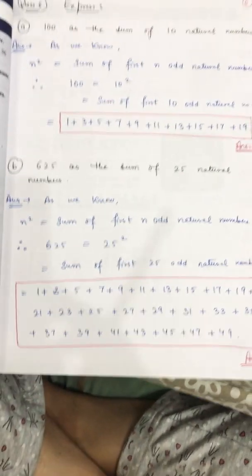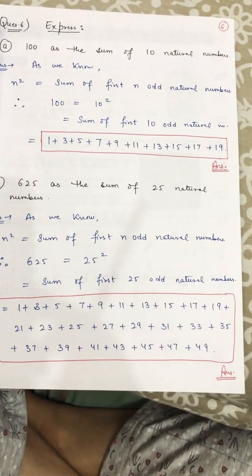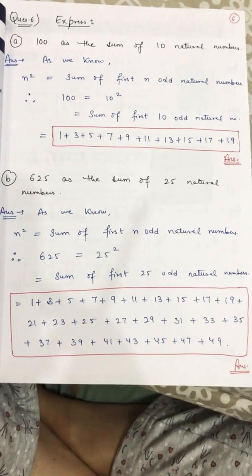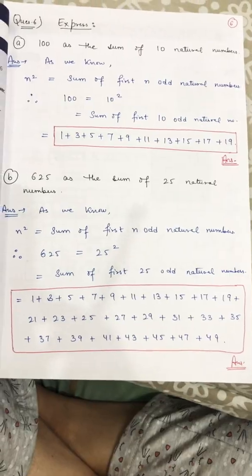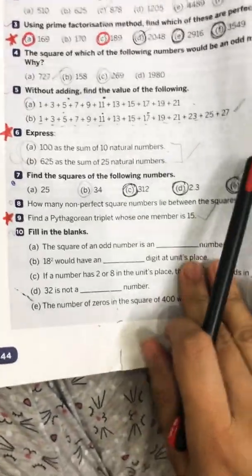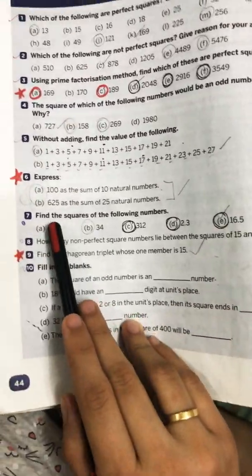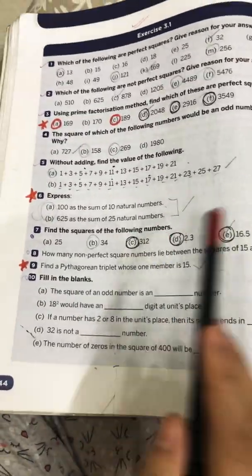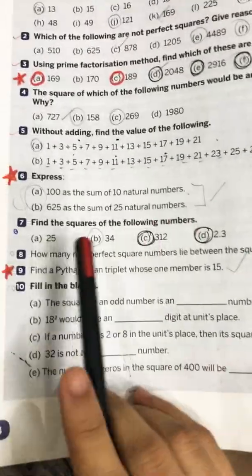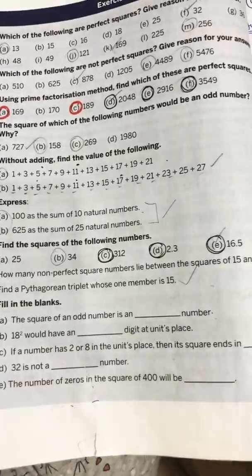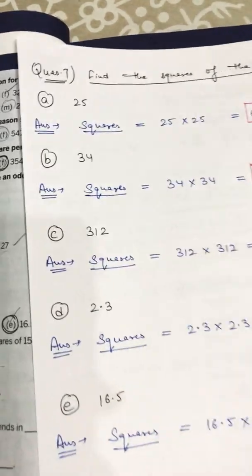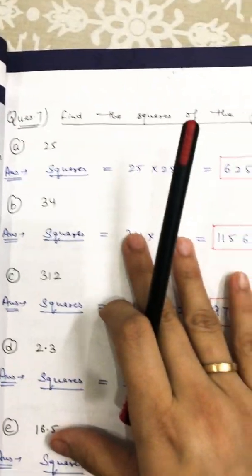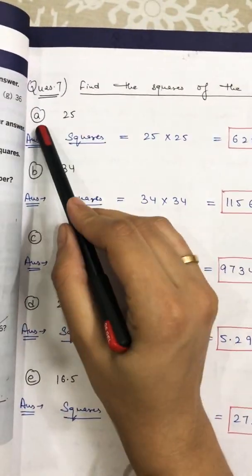I hope you are all doing the practice and writing these questions in the fair notebook. Now we are moving to question number 7: find the squares of the following numbers. It is very simple — you just have to find the squares, which means multiplying that number two times.